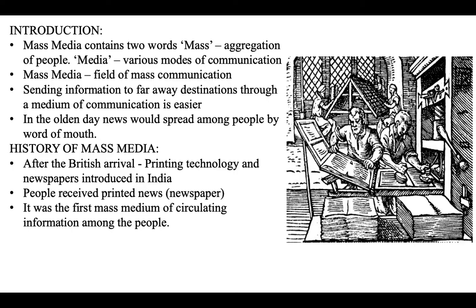We can easily send information to a faraway destination through a medium of communication. In the olden days, a crier would run in the streets beating drums and crying out important news according to the orders of the king — especially in a crowded marketplace. One particular person would be the messenger for the king, reading out the king's commands to the people. The news would then spread among the people by word of mouth.